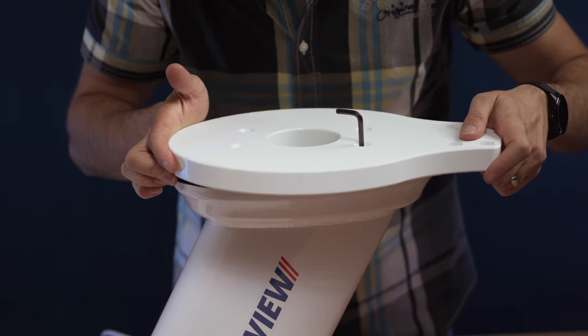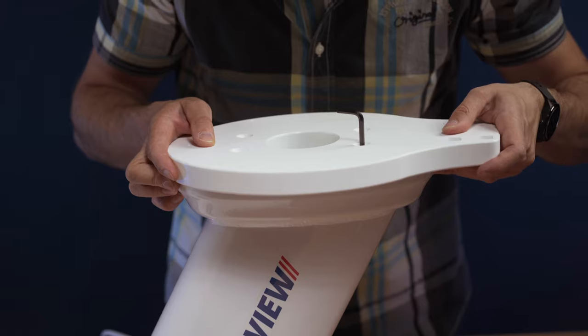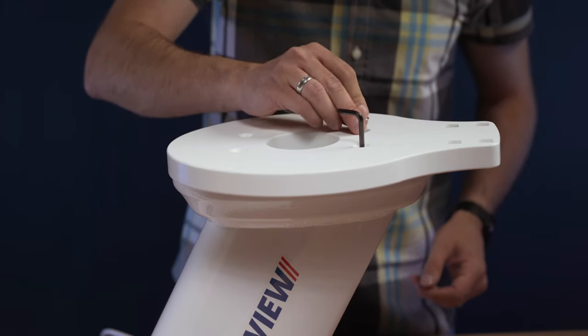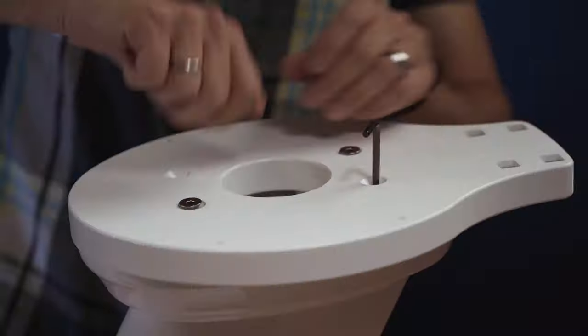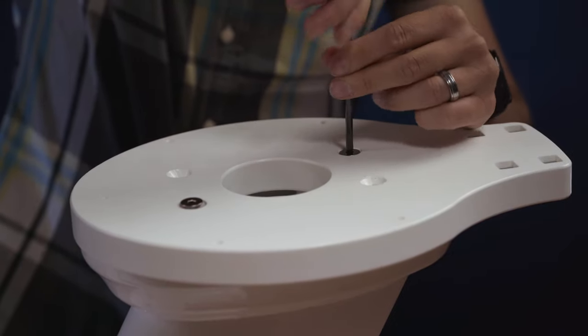To make it easier to align the plate, insert an Allen key through one of the screw holes. Not only does this make it easier to line up the holes, it also prevents the seal from slipping accidentally. Next, tighten the screws and check that the seal is in the correct position.